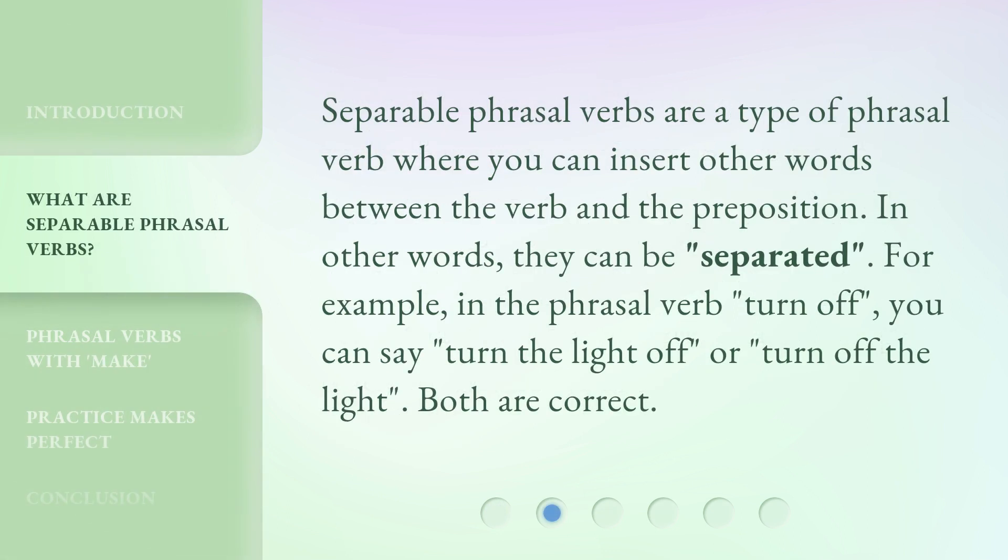Separable phrasal verbs are a type of phrasal verb where you can insert other words between the verb and the preposition. In other words, they can be separated. For example, in the phrasal verb 'turn off,' you can say 'turn the light off' or 'turn off the light.' Both are correct.